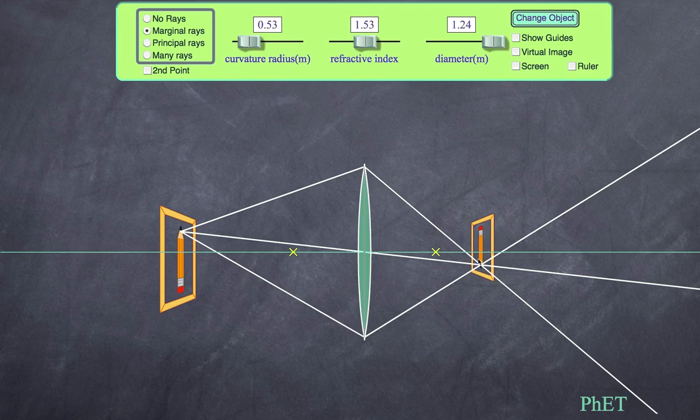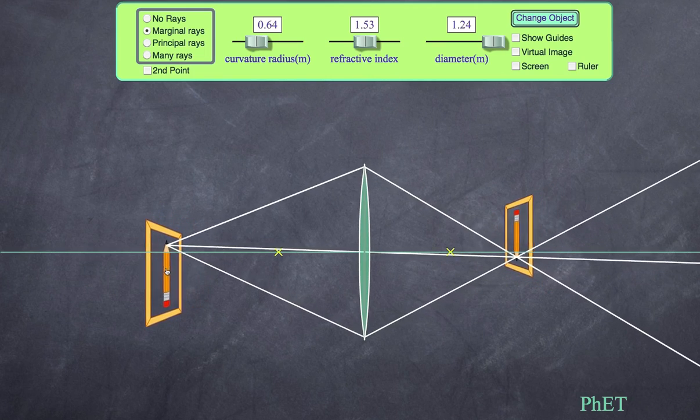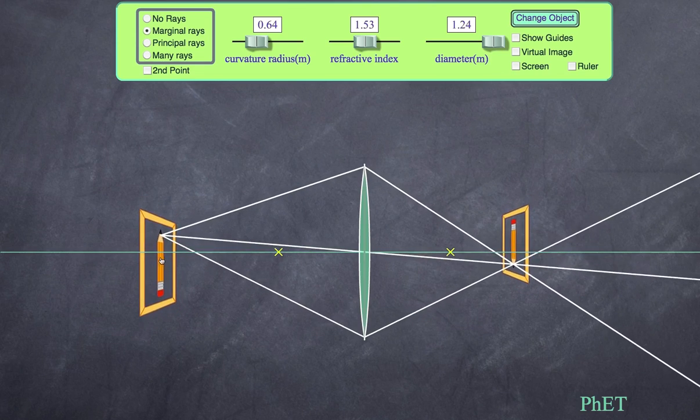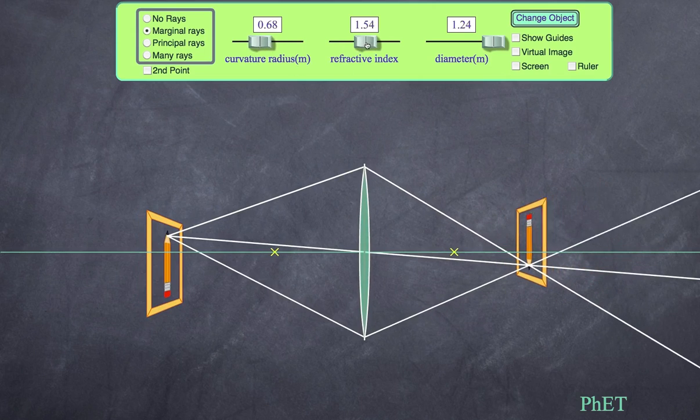There you have it. You can see how the distance of the object affects the real image, how the curvature of our lens affects the real image.